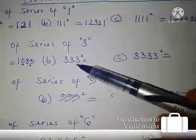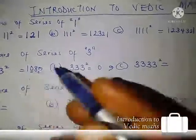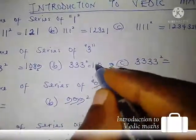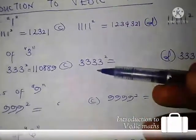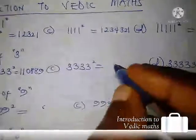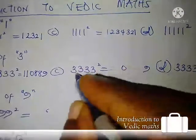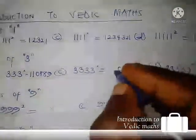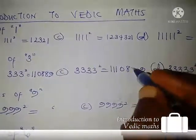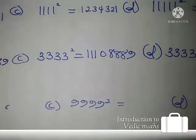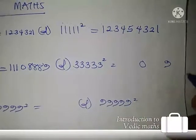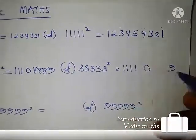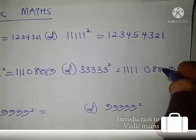For 333 squared — three digits — that means three minus one is two, so zero and nine are constant, and we insert two ones and two eights: 111889. For 3333 squared — four digits — zero and nine are constant, and we have three ones and three eights: 11108889. For 33333 squared — five digits — zero and nine are constant, then we have four ones and four eights: 1111088889.